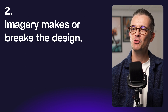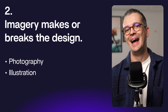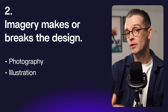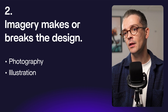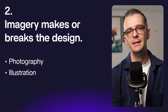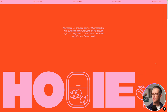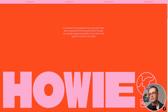Secondly, imagery makes or breaks the design. When we talk about imagery, we mean photography and illustration in a very general sense — that can be hand-drawn illustration, 3D elements, generated elements, textures, lots of different things. The images we bring in can actually make or break our entire layout. In the hero section for this site, Howie, we have a loading animation where line art illustrations make up the word mark, adding visual interest beyond just type.